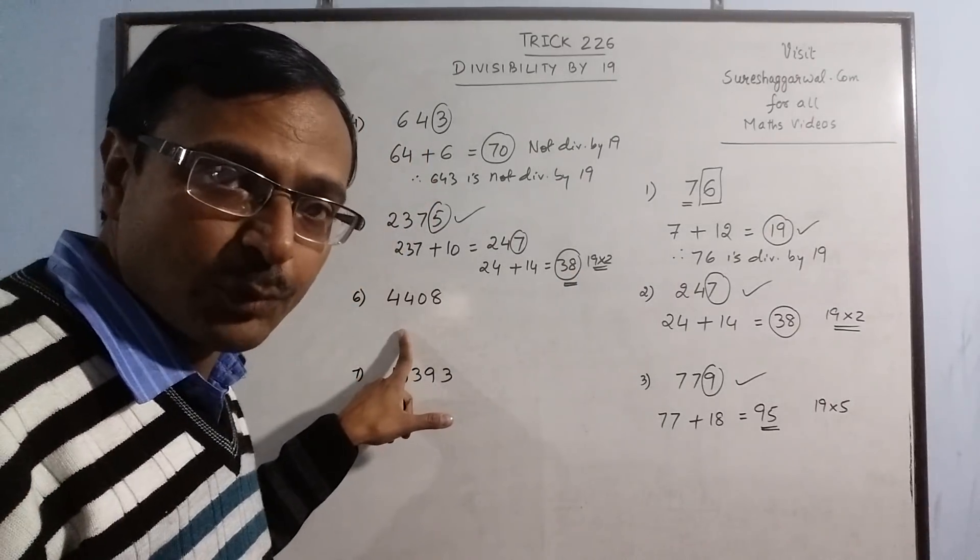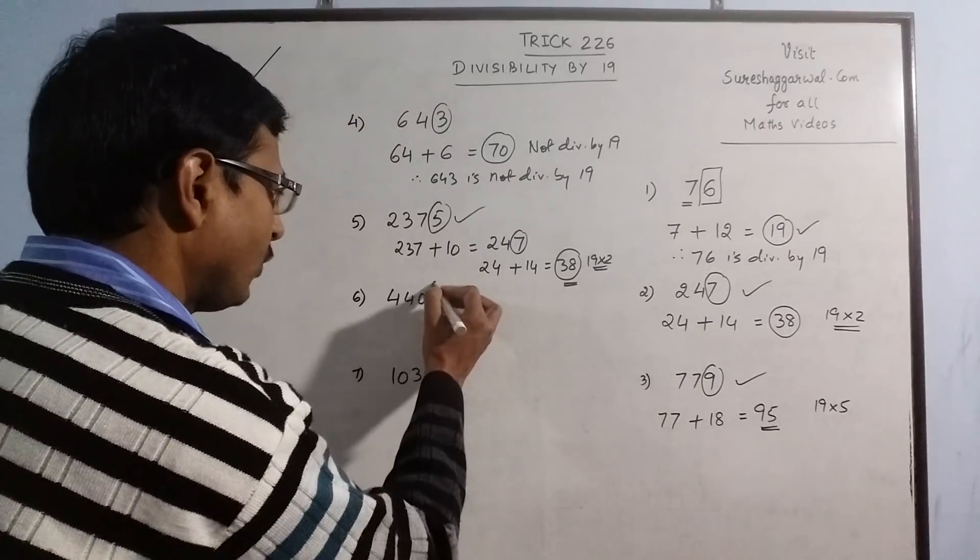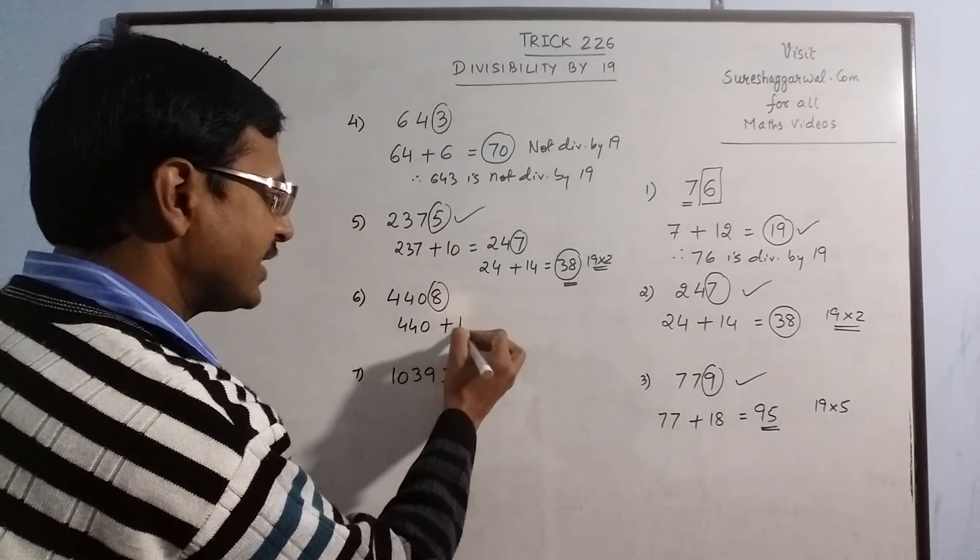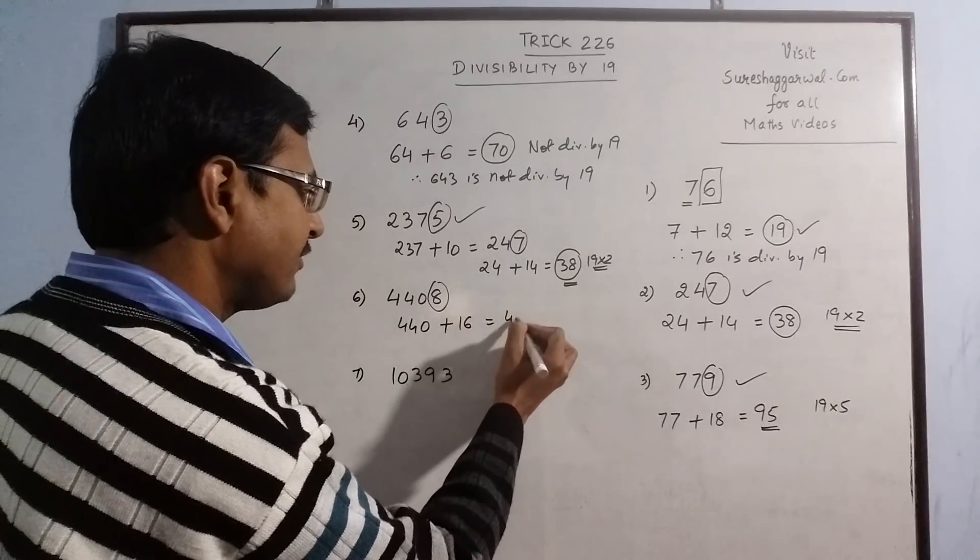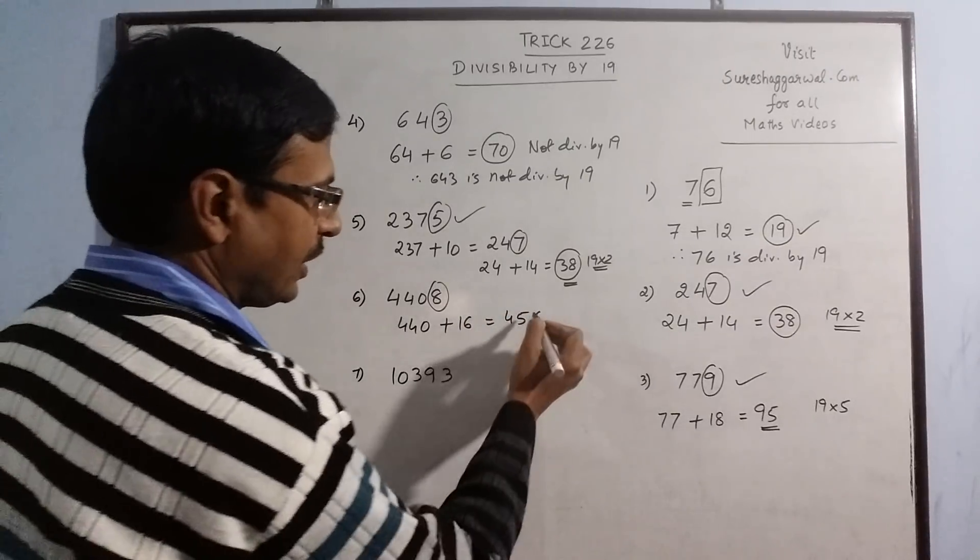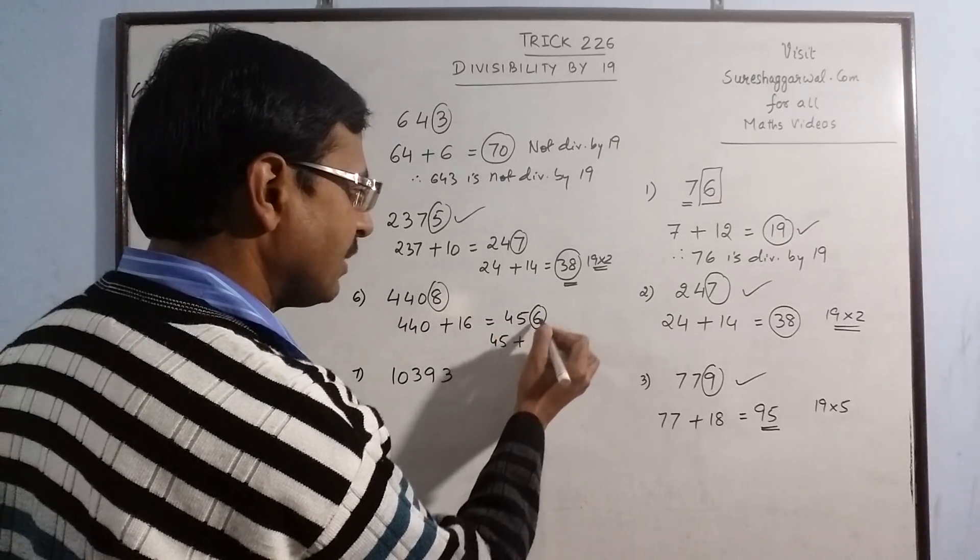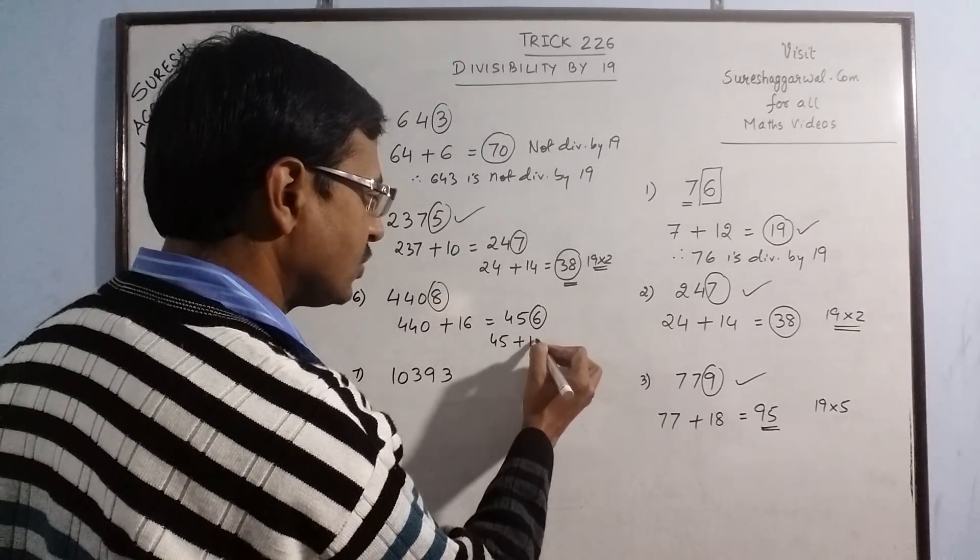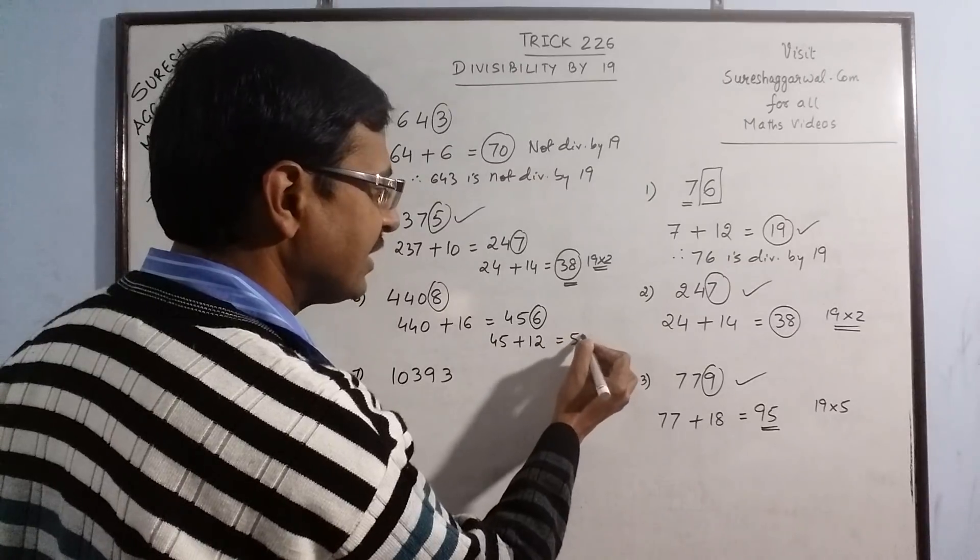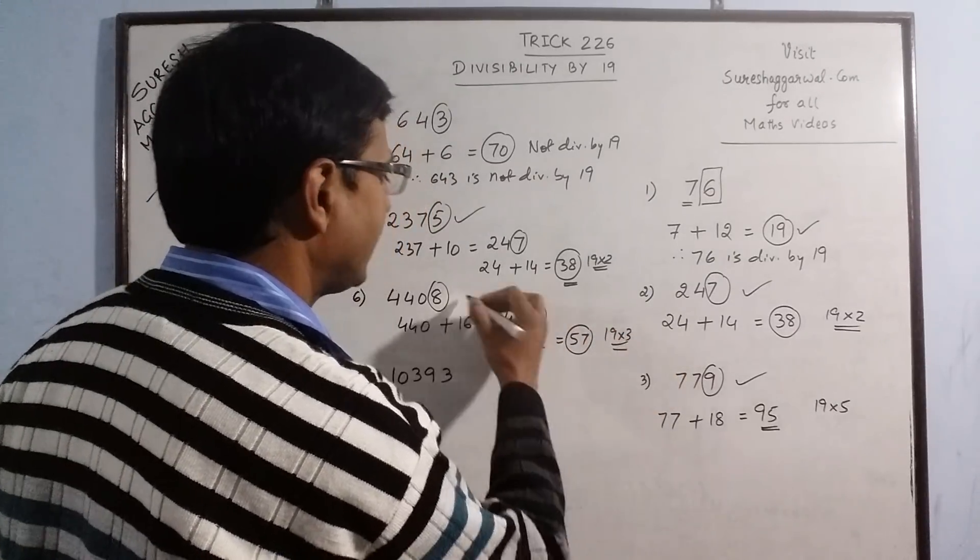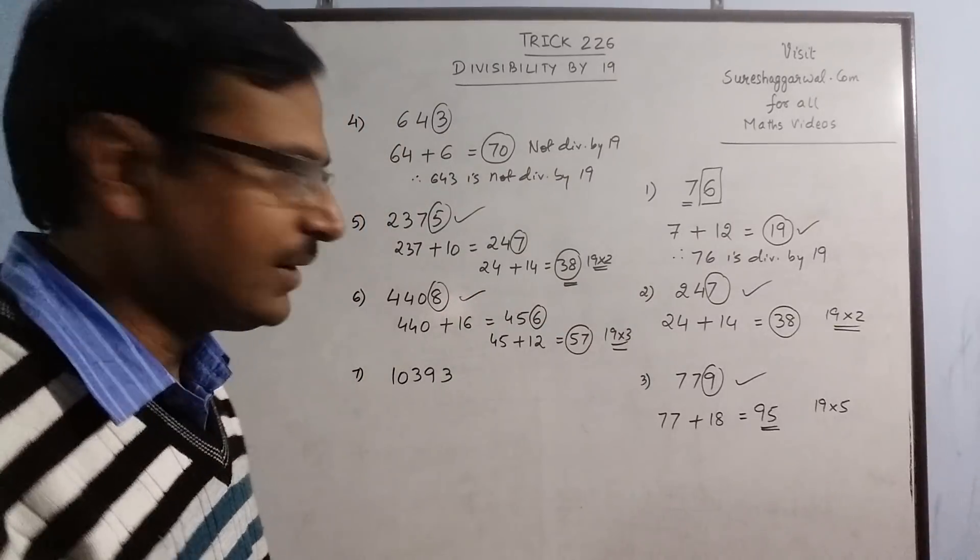Now see, another larger number 4408. See, 440 and you add double of 8, that is 16, so you get 456. Now I want to test this again. So 45 plus double of 6 is 12, so you get 57. Very easy. 19 into 3 is 57. So that entire number is divisible by 19.